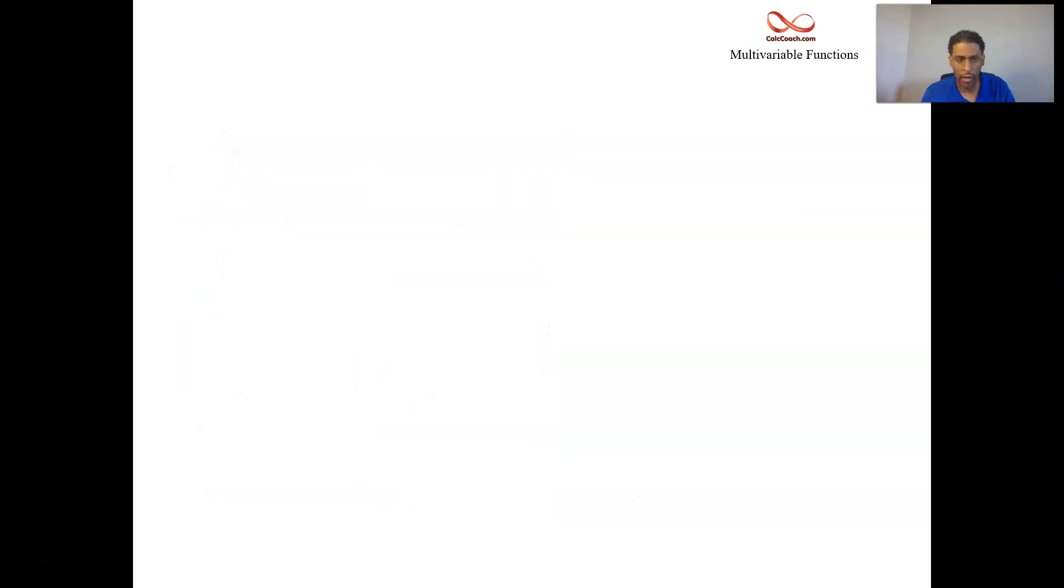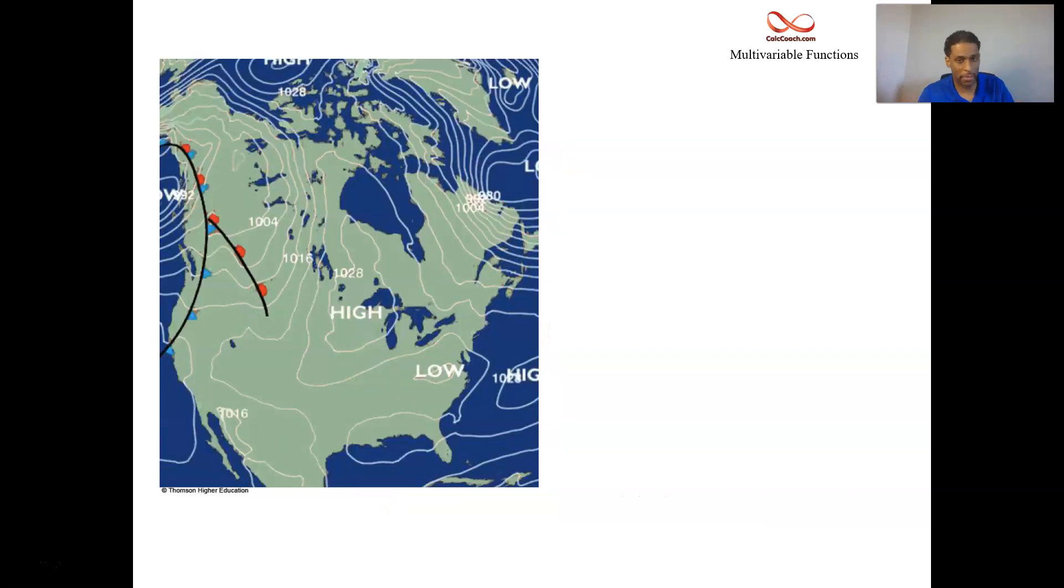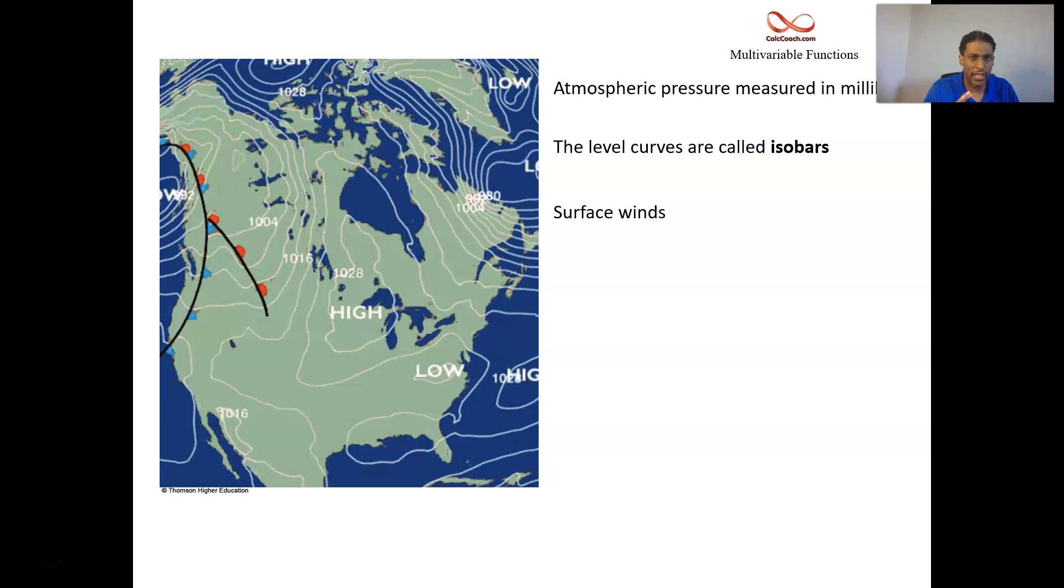We can use level curves for other things as well. This here is a weather map. These different contours, these different lines, represent places where you have atmospheric pressure being the same. This represents atmospheric pressure measured in millibars. These different contours represent the same millibar, and so it's called isobars. The wind will be moving the strongest where they're tightly packed at.